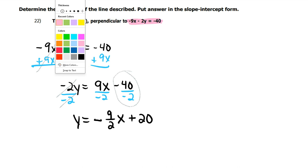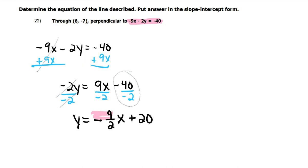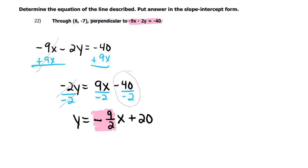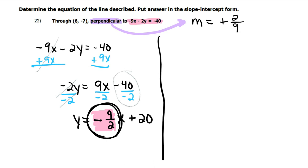The slope of the pink line is negative 9 halves. My line is perpendicular to the pink one. So I need a slope that is opposite reciprocal of this one. The opposite of a negative is a positive. And the reciprocal of 9 halves is 2 9ths.